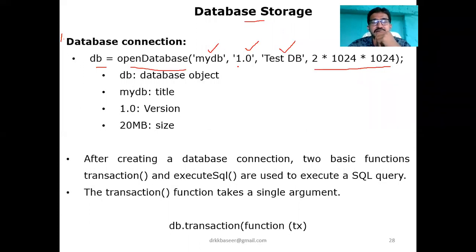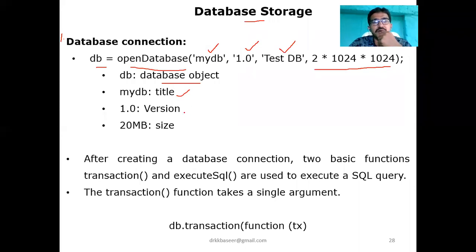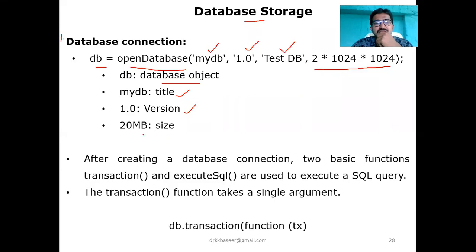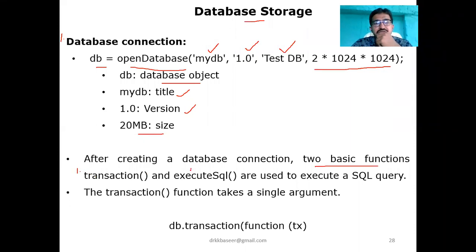So totally four parameters are required for creating a database connection in database storage. The first syntax in database storage is different from session storage and local storage. db stands for the database object, 'mydb' is the title or name of the database, '1.0' is the version, 'Test DB' is for testing (user-defined), and 2*1024*1024 is the size - approximately 20 MB we are creating. After creating a database connection, two basic functions we need to run are: transaction and executeSQL.